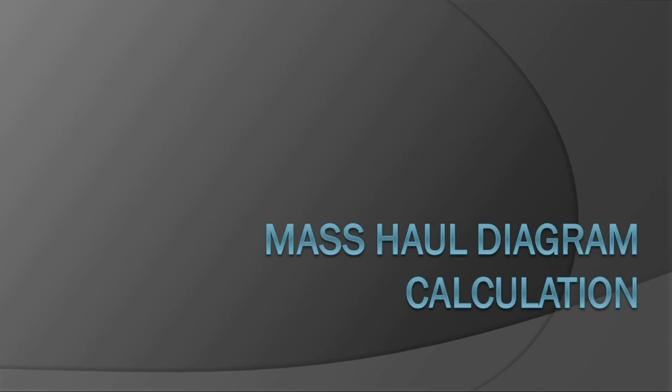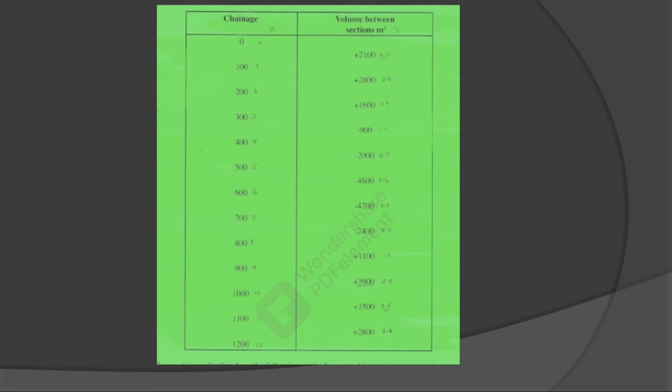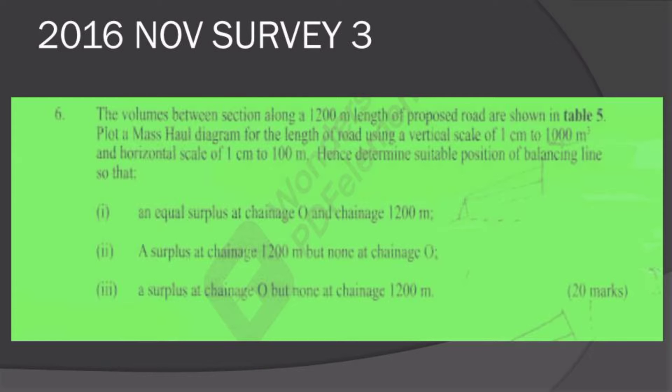Hello guys, welcome to the channel. Today I'm going to be teaching you how to determine suitable position of balancing a line from a mass curve. In this method we use the vertical ordinate plotted on the same distance scale as the longitudinal section representing the algebraic sum of the correction volumes, and those volumes are for cut and fill.